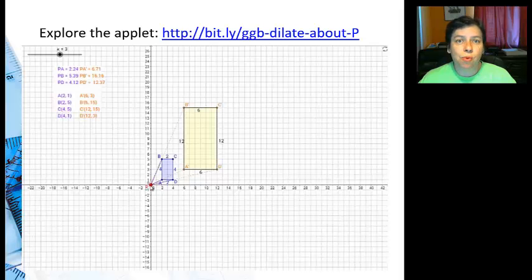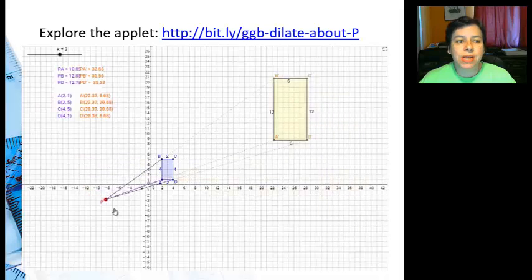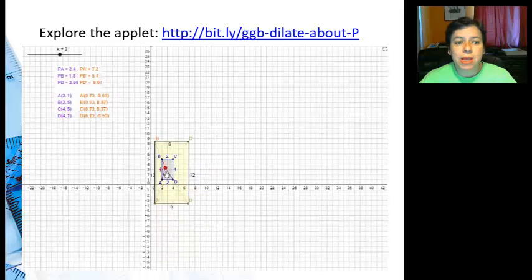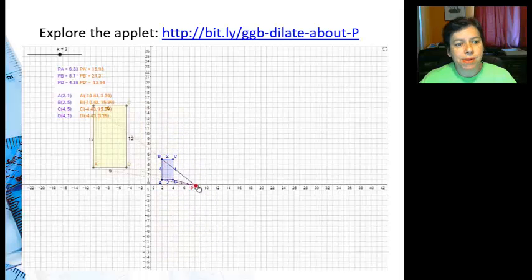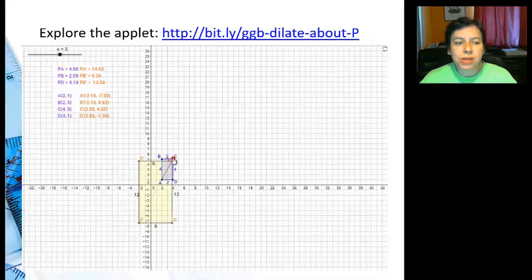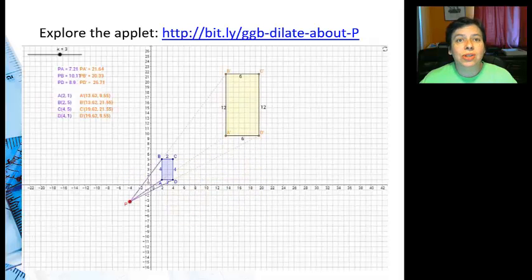But now let's look at the point where we dilate about. Here I'm moving the point of dilation, and you can see that the image is moving, but one thing that's not happening to the image is that it's not changing size. So the point of dilation doesn't really determine the size of the object, it just determines the location of the object.